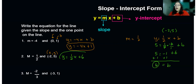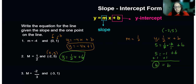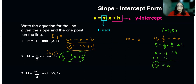Just as a refresher: you need the slope and you need the y-intercept in order to use slope-intercept form to write the equation of a line. Remember, in your ordered pair, if x is zero, the other number is your y-intercept. If it's not, then we have to go find it — we go to the equation and solve for b.